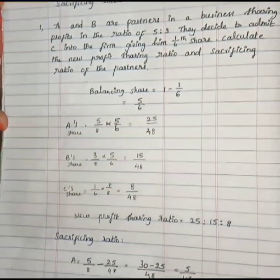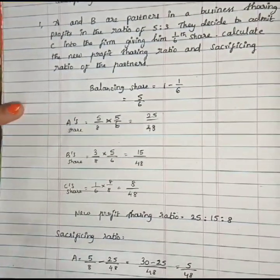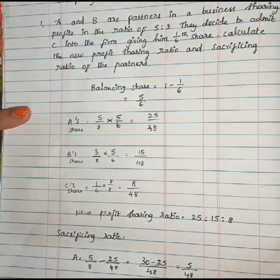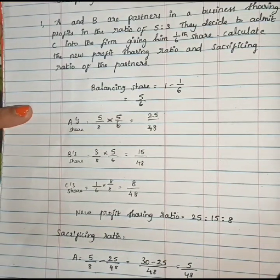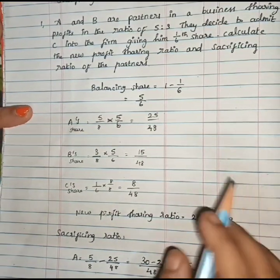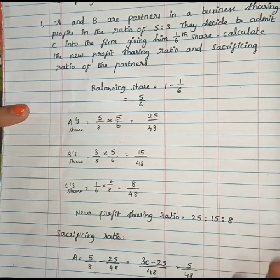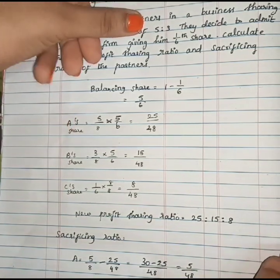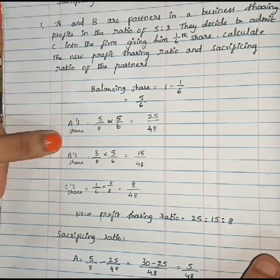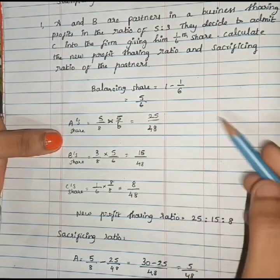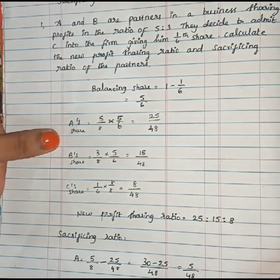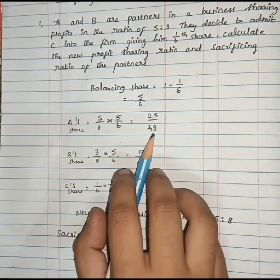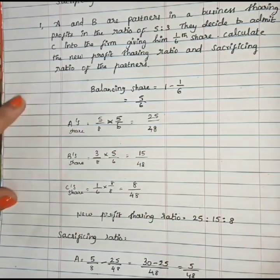A's new share: A's old share is 5/8, multiplied by the balancing share of 5/6. So 5/8 × 5/6 = 25/48. That is A's new share.